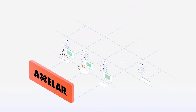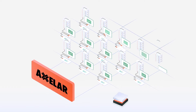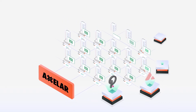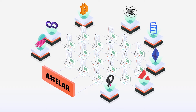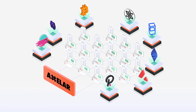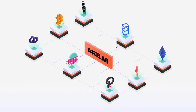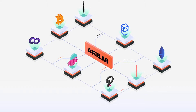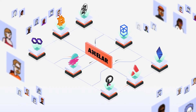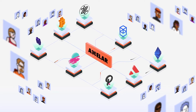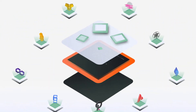So what's in this stack? At its core, Axelar is a decentralized network run by a permissionless set of validators that power cross-chain interoperability requests. Designed to achieve universal interoperability, the network is blockchain agnostic, supporting diverse approaches to consensus.